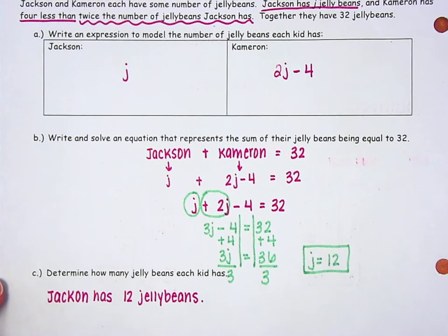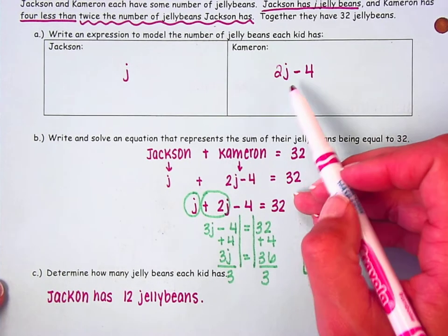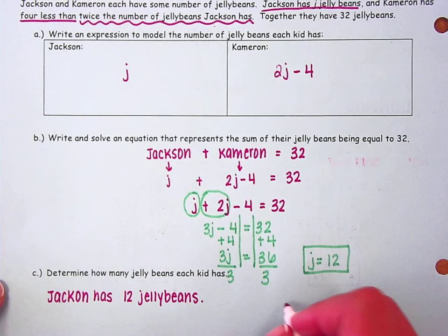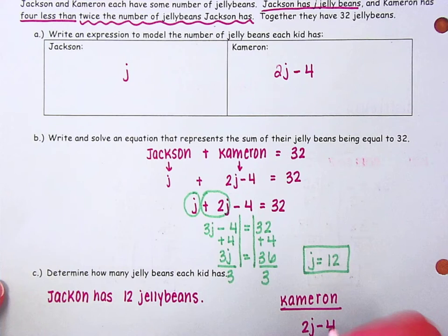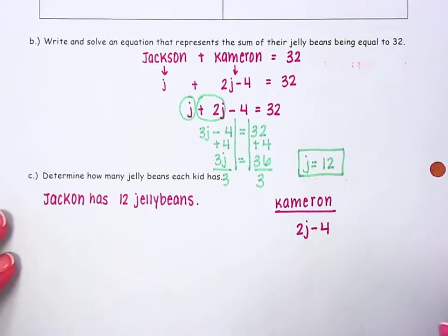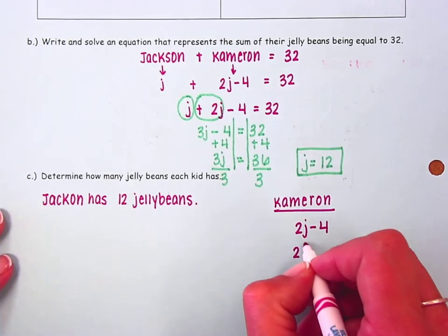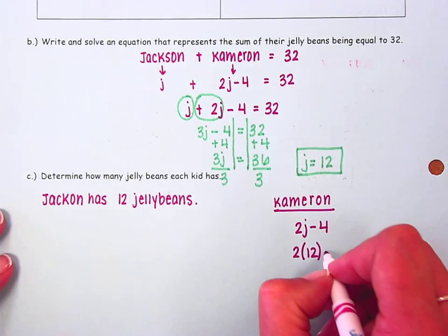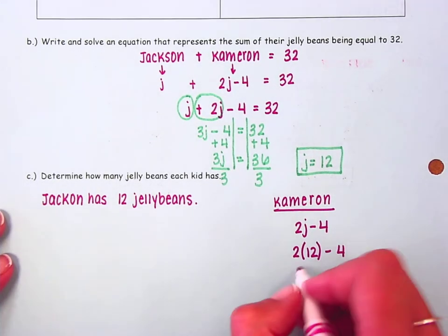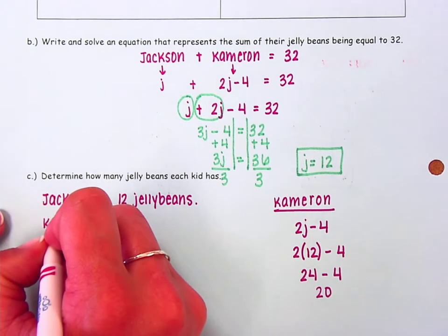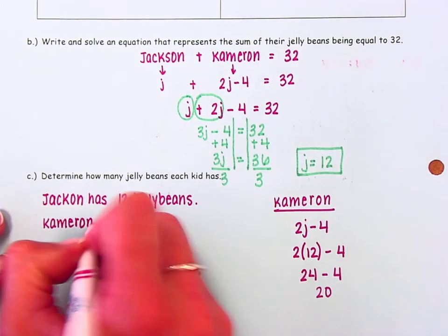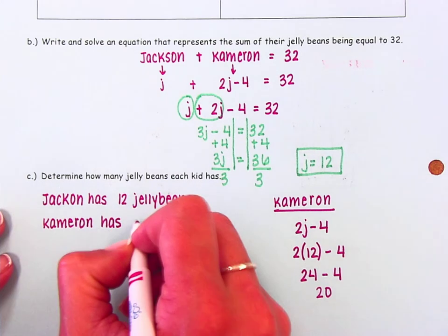Jackson's was easy to figure out. Now we have to figure out Cameron's. We knew that Cameron had twice the number that Jackson had, but 4 less than that. So Cameron had 2J minus 4 jelly beans. If J is equal to 12, that means Cameron had 2 times Jackson's 12 jelly beans, but 4 less. 2 times 12 is 24 minus 4. 24 minus 4 is 20. So Cameron has 20 jelly beans.